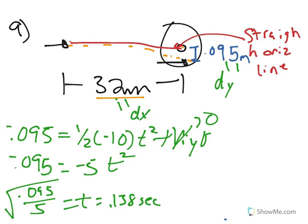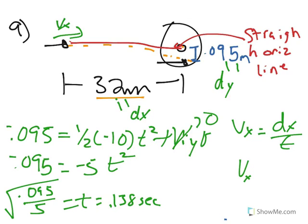With that time, we now have to find the initial speed. Since it's fired horizontally, the only speed it can have is vx. So vx equals dx over t: vx equals 32 divided by 0.138, which gives vx equal to 232 meters per second.